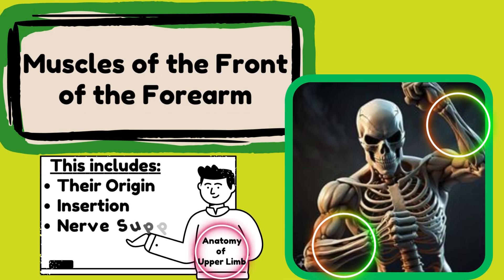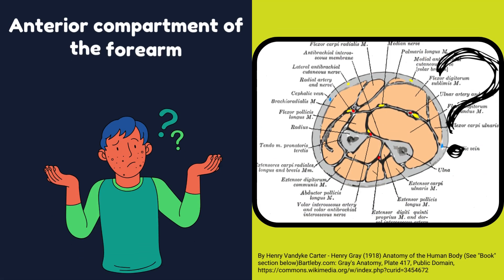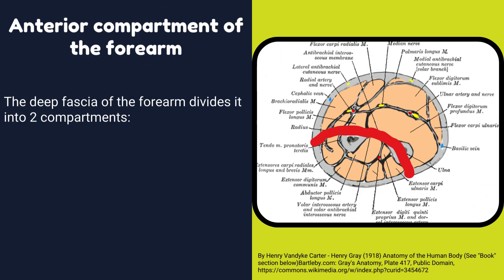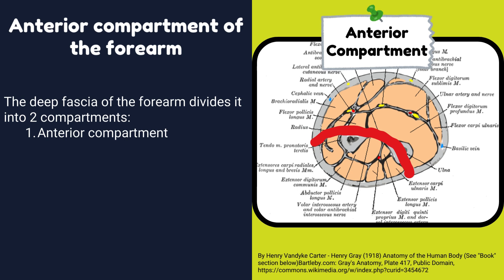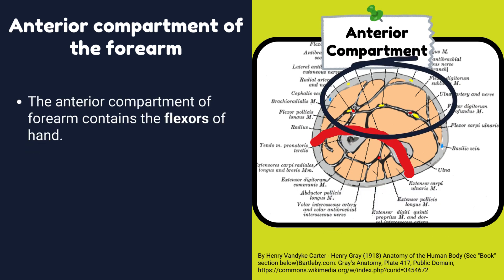In this video, we will talk about the muscles of the front of the forearm. This is the anterior compartment of the forearm. The deep fascia of the forearm divides it into two compartments: anterior compartment and posterior compartment. The anterior compartment of the forearm contains the flexors of the hand.